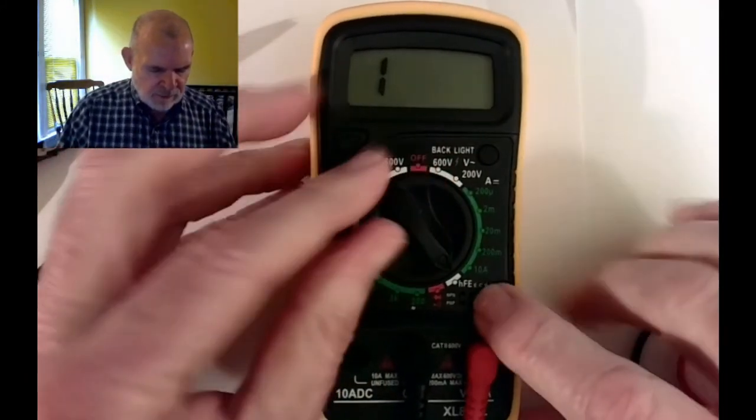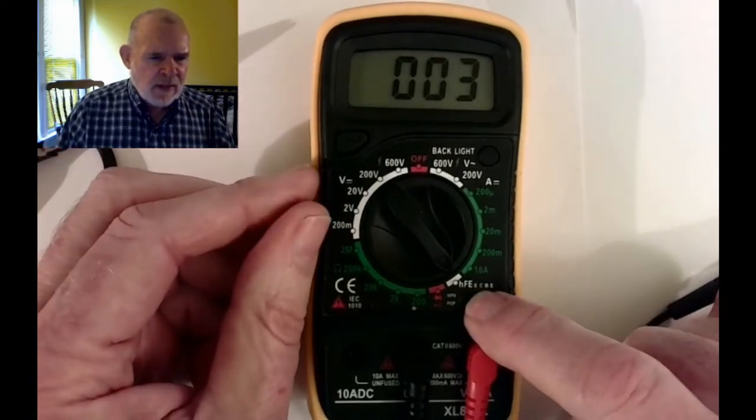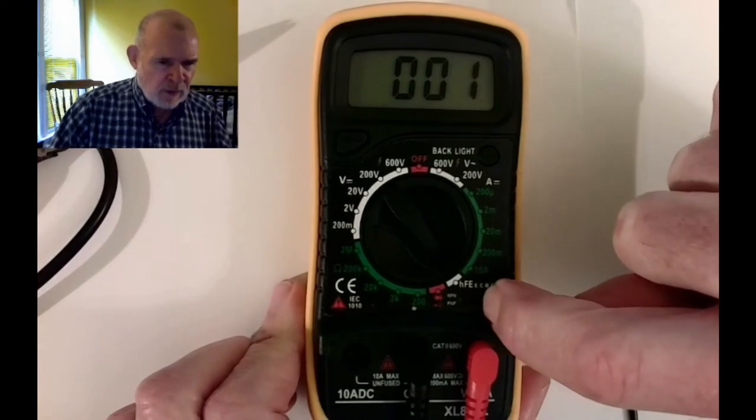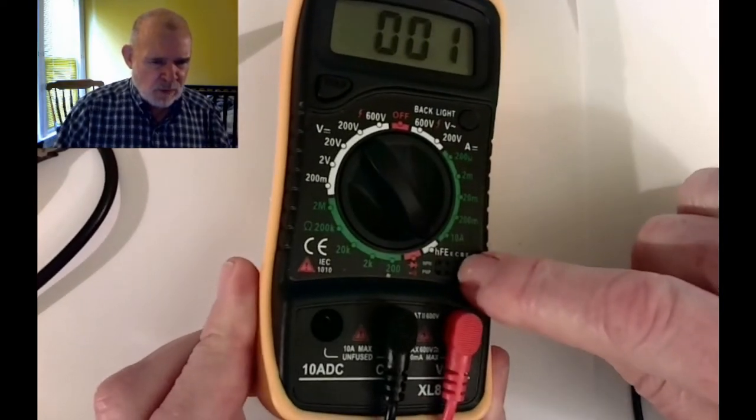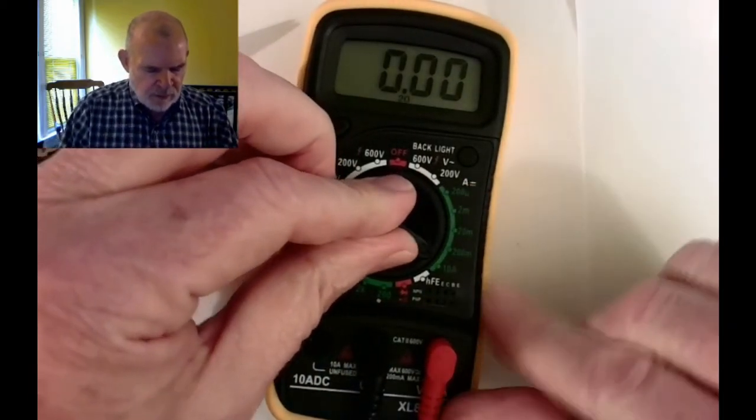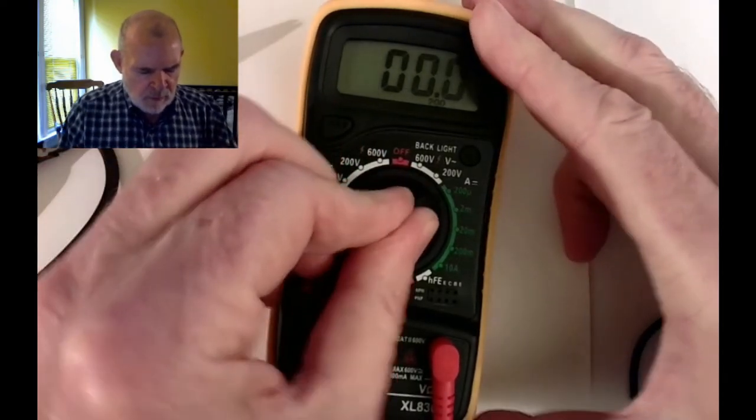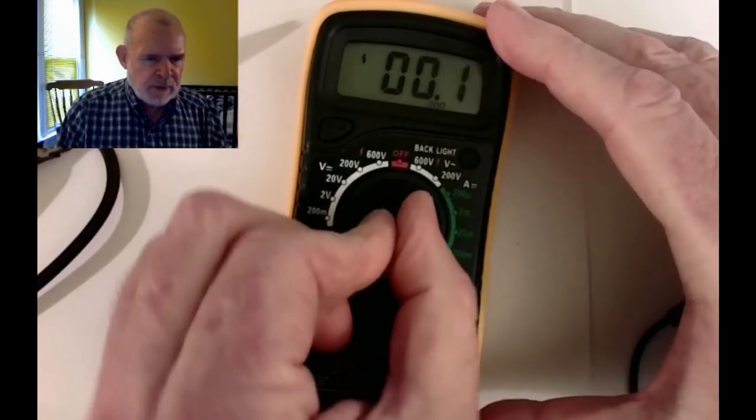The next set of scales - there's one scale in white - is for transistors that uses these little holes here. We're not going to use those, so we'll just ignore that. The next set of ranges are for measuring current. We might use those. Then we have the AC volts and back to off.